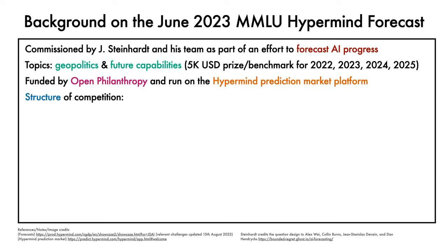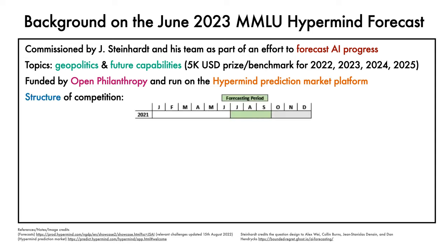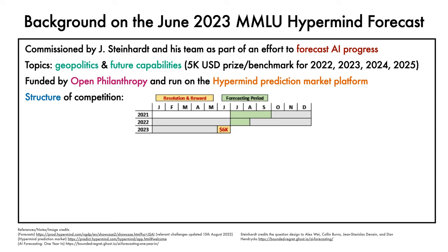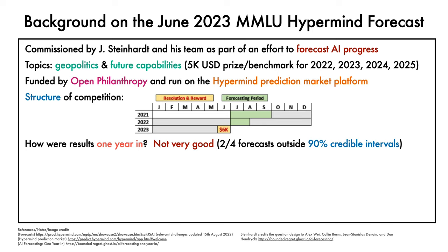The structure of the competition involved an initial forecasting period in the summer of June 2021, followed by a window to update forecasts in the summer of 2022. The resolution of the outcome and the reward was set to be determined in June 2023. It's interesting to ask how good were the results one year into the competition? In summary, they were not very good.